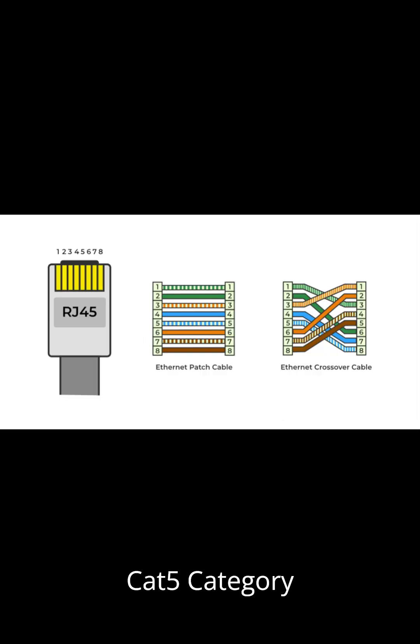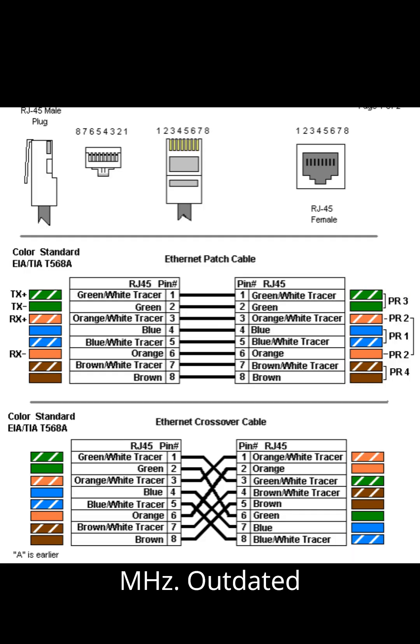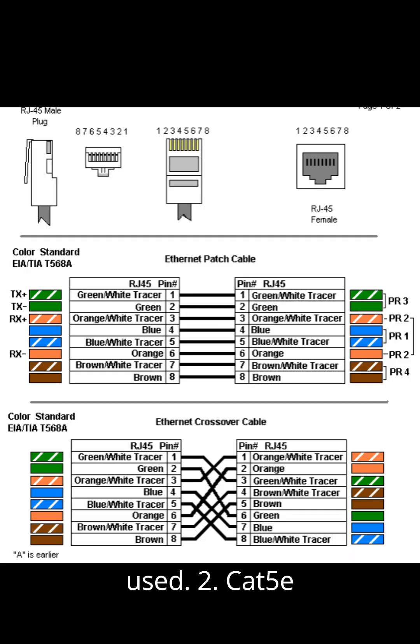1. CAT 5 (Category 5): Speed up to 100 Mbps, Bandwidth 100 MHz. Outdated today, rarely used.